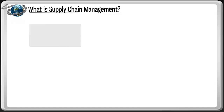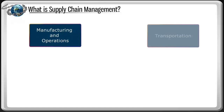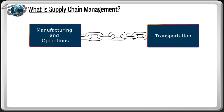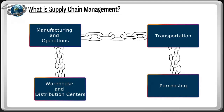They are manufacturing and operations, transportation, warehouse and distribution, and purchasing. Let's take a look at the main links.